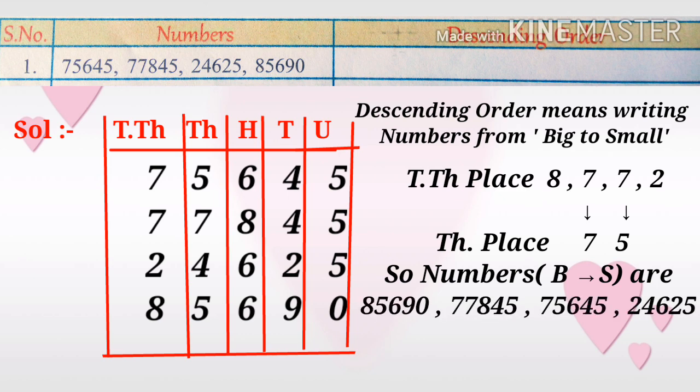In the thousands place we get 7 and 5. The biggest number starts with 8, so eighty-five thousand six hundred ninety comes first. Next is seventy-seven thousand eight hundred forty-five.